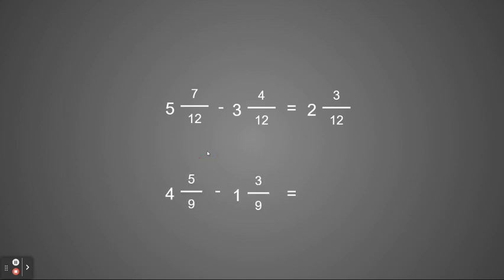For another problem, if I have four and five ninths minus one and three ninths, I start by subtracting the whole numbers: four minus one is three. Then I subtract the numerators: five minus three is two. So I'd have three and two ninths.